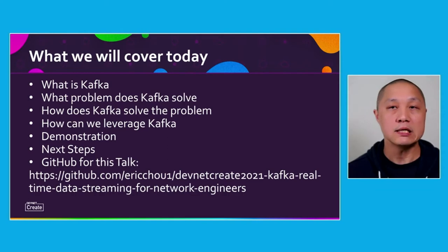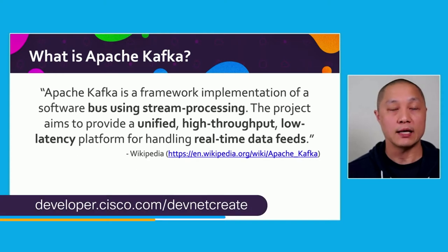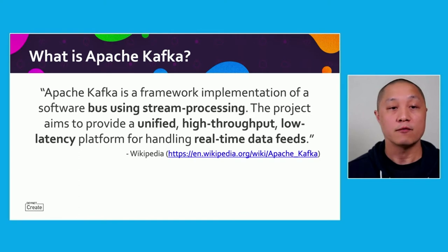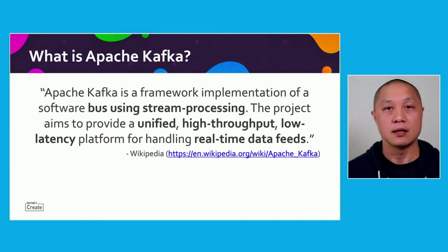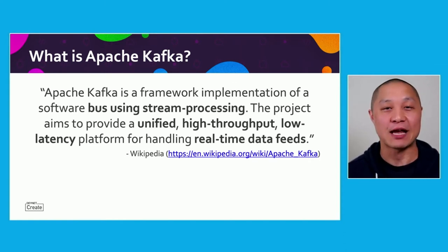So what is Apache Kafka? Apache Kafka is a framework implementation of a software bus for stream processing. This project aims to provide a unified, high-throughput, low-latency platform for handling real-time data feeds. Key keywords include real-time data, a unified location for all parties to communicate, and high throughput and low latency — very tall orders for a project to achieve.